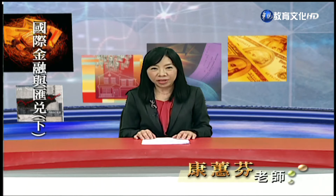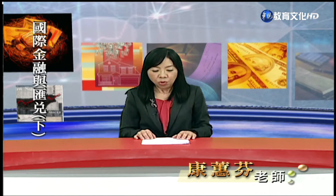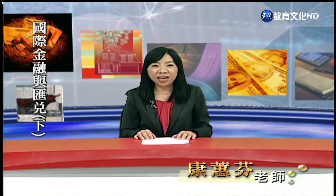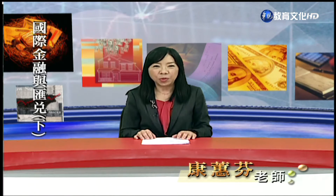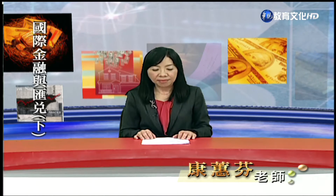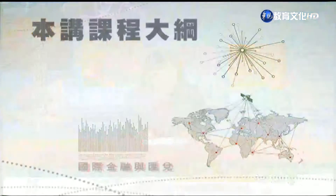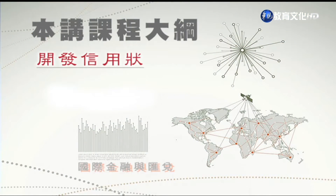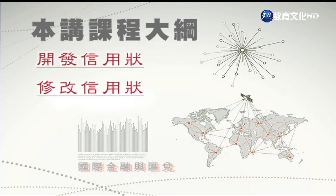我們將繼續討論有關外匯業務的輔助單元。首先在簡報的開頭，信用狀的排程包含了報告與需求的內容。